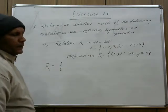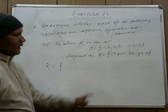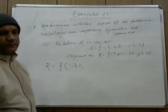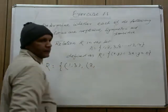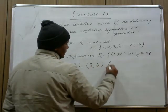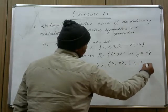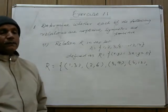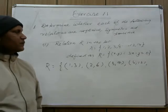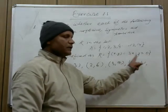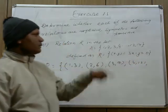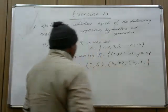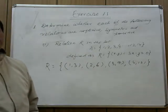If x = 1, then y = 3, giving ordered pair (1,3). If x = 2, y = 6; x = 3, y = 9; x = 4, y = 12. We cannot write (5,15) because the set only contains numbers 1 to 14. So the ordered pairs of R are: (1,3), (2,6), (3,9), and (4,12).